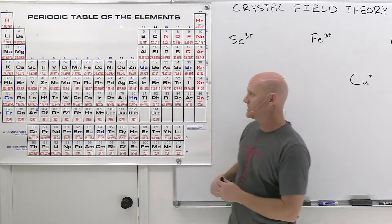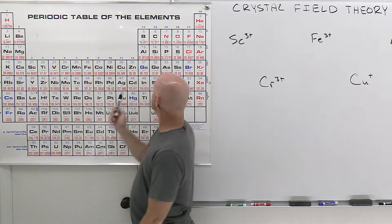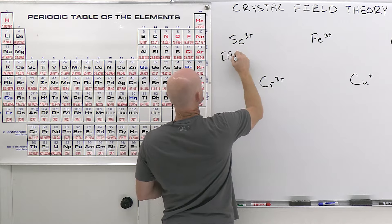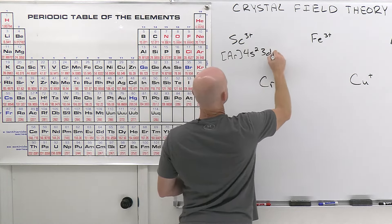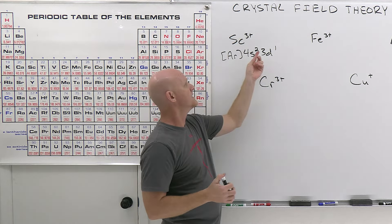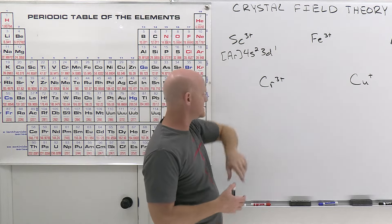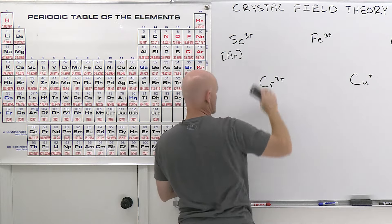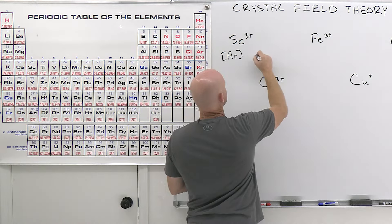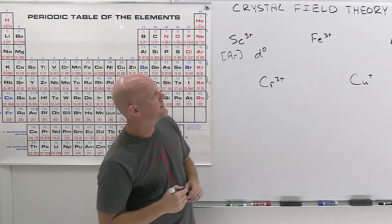Starting with scandium (atomic number 21): neutral scandium is [Ar] 4s² 3d¹. For Sc³⁺, we remove three electrons — remembering to remove the 4s before the 3d. That removes all three, so Sc³⁺ is isoelectronic with argon. The key point: Sc³⁺ is a d⁰ transition metal — it has zero d electrons.